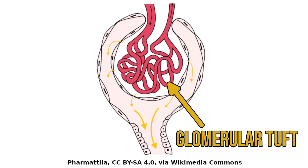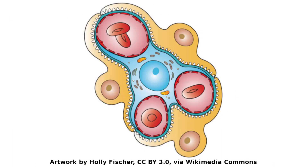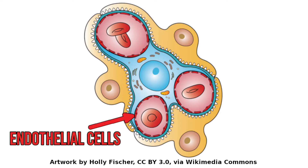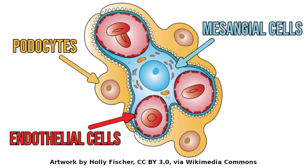The endothelial cells here have gaps between them called fenestrations that allow small molecules to pass through. Within the glomerulus itself, there are three different types of cell: the endothelial cells that line the capillaries, the podocytes lining the Bowman's space, and the mesangial cells that form a very small amount of connective tissue that holds everything together.